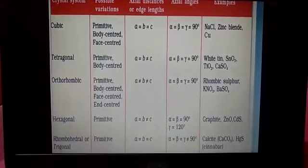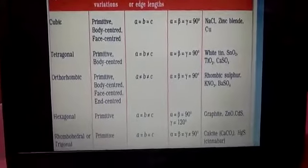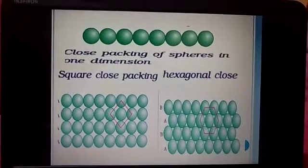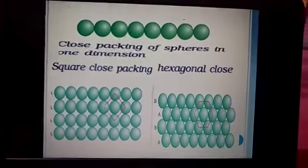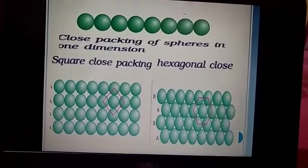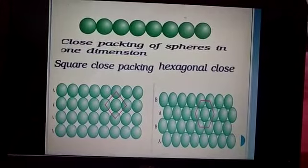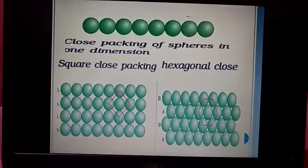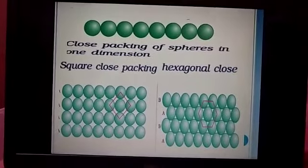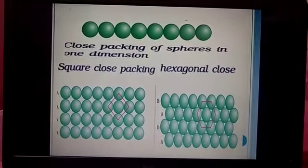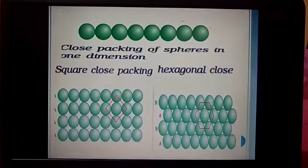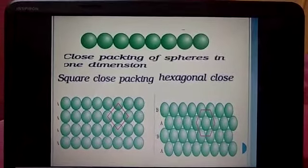Now packing in crystals: we have one-dimensional close packing, close packing in two-dimensional cases, and close packing in three-dimensional cases. In one-dimensional close packing, there is only one way in which the spheres are arranged — they should be touching each other in a row, as shown in the diagram.